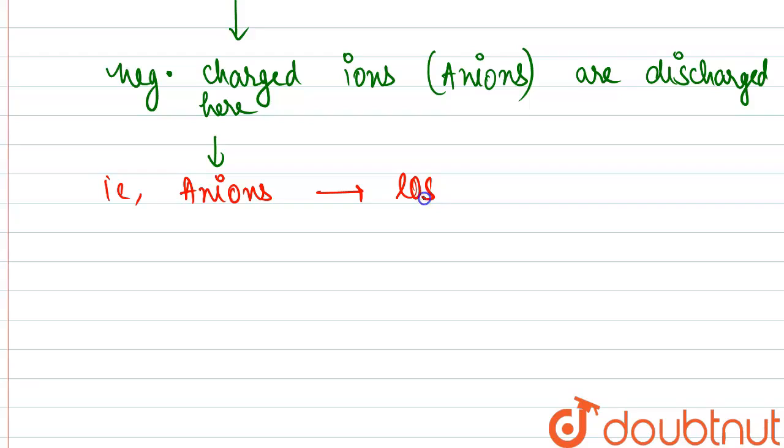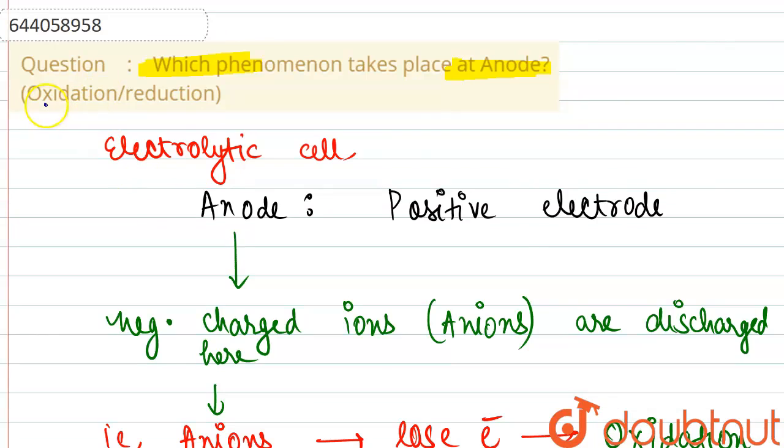And the phenomena of loss of electrons is what we define as oxidation. So at the anode in an electrolytic cell, we can say oxidation - that is loss of electrons - takes place.